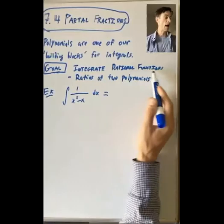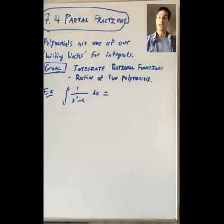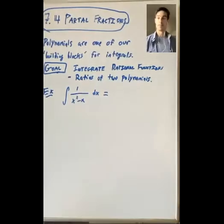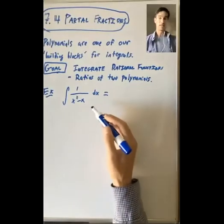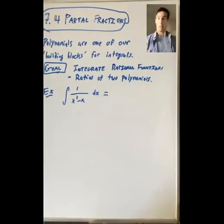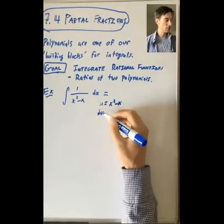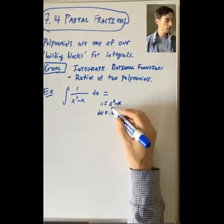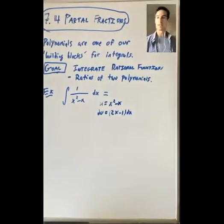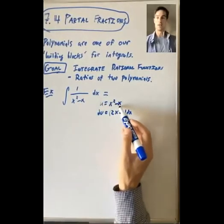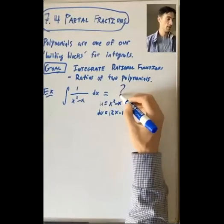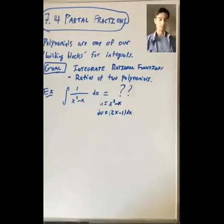A rational function is a ratio of two polynomial functions. Here's an example: in the numerator we have a polynomial, and in the denominator we have x squared minus x, also a polynomial. One idea would be to set u equal to the denominator, but then du equals 2x minus 1 dx — and there's no 2x dx anywhere. It's not easy to write 2x in terms of u, so we need a new idea to compute an integral like this one.